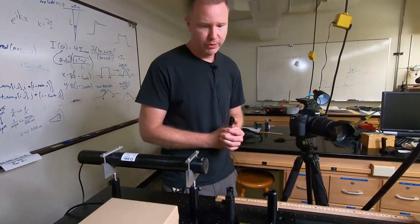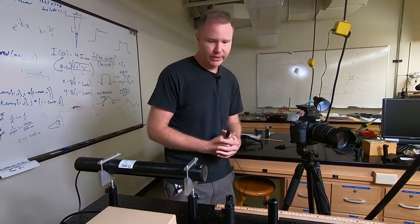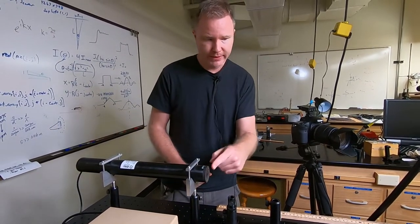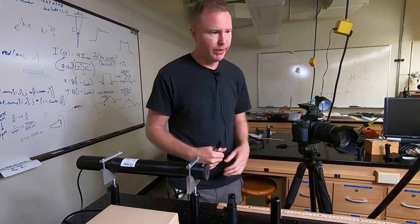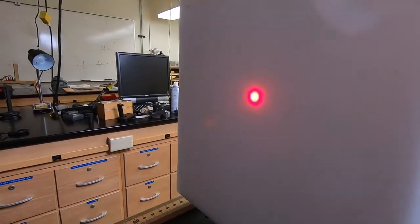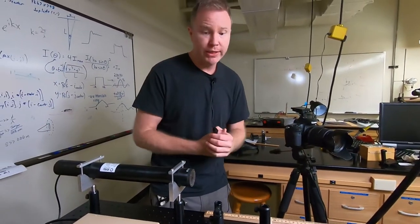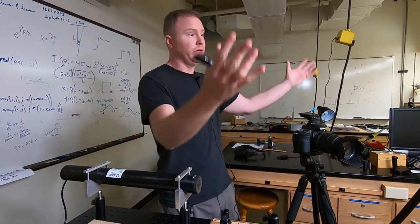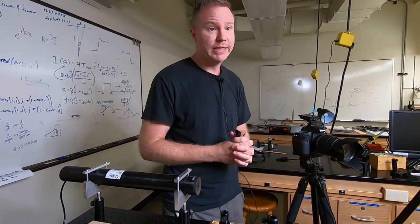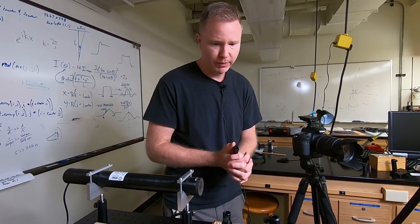For the next diffraction experiment, I'm going to need to install what's called a spatial filter. A spatial filter takes this laser beam which is very tiny, but if you zoom in on it, it wouldn't look very clean, and it turns it into a much cleaner beam. That beam will also be quite a clean Gaussian beam. That beam will also spread out quite a bit, but that's okay for the next experiment.